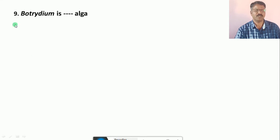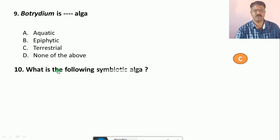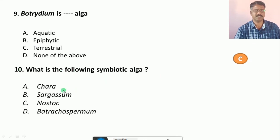Question number 9: Trentepohlia is... Their options are A. Aquatic Alga, B. Epiphytic Alga, C. Terrestrial Alga, D. None of the above. The correct answer is C, that is Terrestrial Alga. Question number 10: What is the following Symbiotic Alga? Their options are A. Chara, B. Sargassum, C. Nostoc, D. Volvox. The correct answer is C, Nostoc.